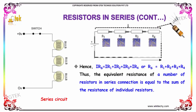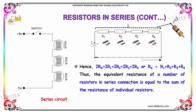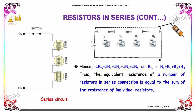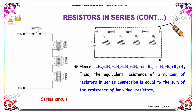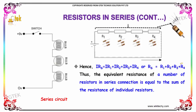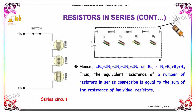As indicated, I into Rs is nothing but I into R1 plus I into R2 plus I into R3 plus I into R4. So the resistance in series is the summation of the resistances R1, R2, R3, and R4.